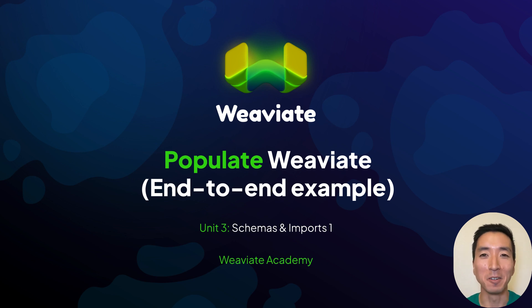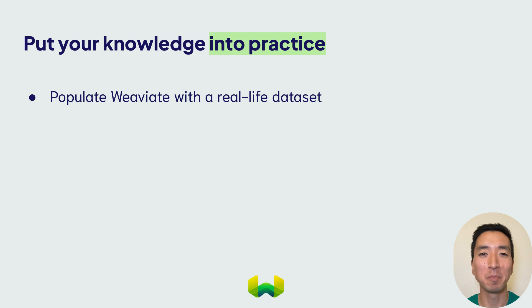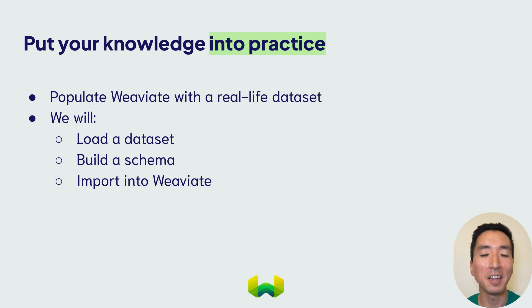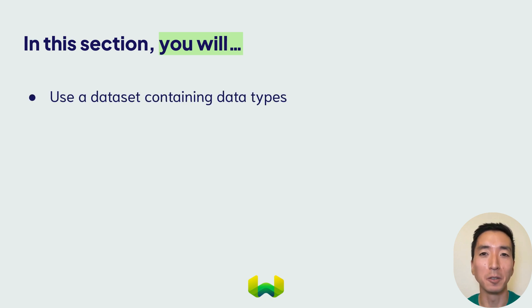Hey there! In this section, we'll put our new knowledge into practice using a real-life dataset from the internet. With this dataset, we'll guide you through the whole process of loading a small dataset, building a schema based on the data, and then importing it to Weaviate. This dataset comes from Kaggle and consists of multiple columns suitable for different data types and property configurations.